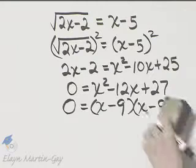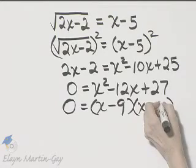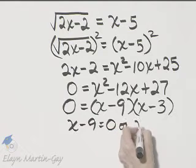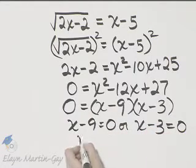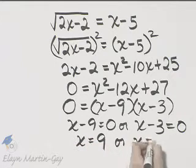Once we do this, remember we set both factors equal to 0. So I'll say x minus 9 equals 0 or x minus 3 equals 0. Here x is 9 and here x is 3.